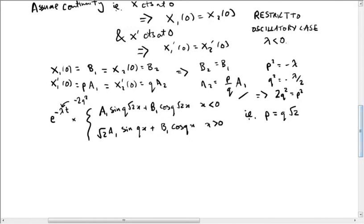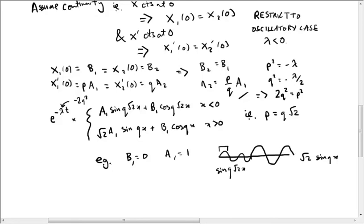So if you imagine, for example, the solution, maybe it's given by b1 equals 0, a1 equals 1. So this function, the initial function, is going to be just like sine q root 2 x over here, and over here it will be root 2 times sine qx. In other words, its period or its wavelength will have increased by a factor of root 2, but its height will have also increased and that compensates, so it looks like this. And that's how we obtain continuity of the derivative at this point, that playoff between the increase in wavelength and the increase in amplitude.